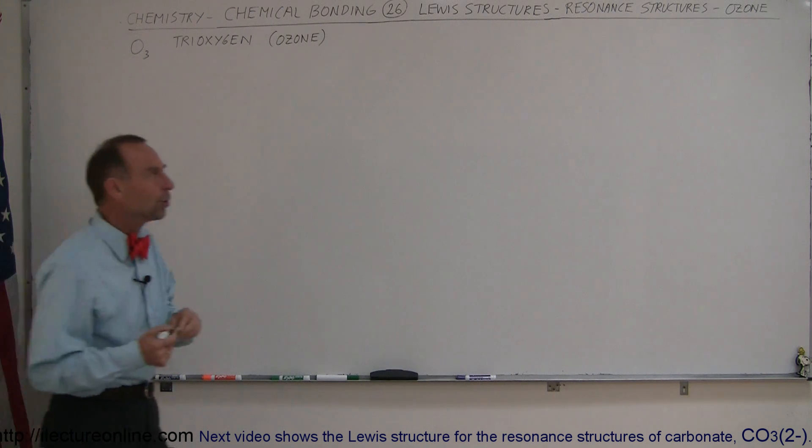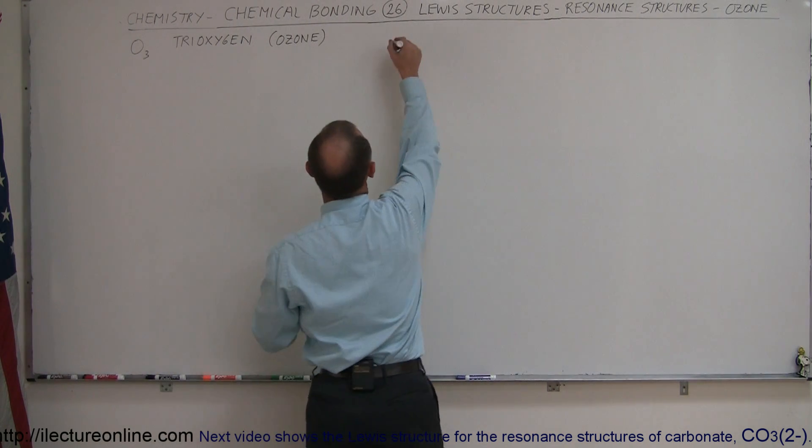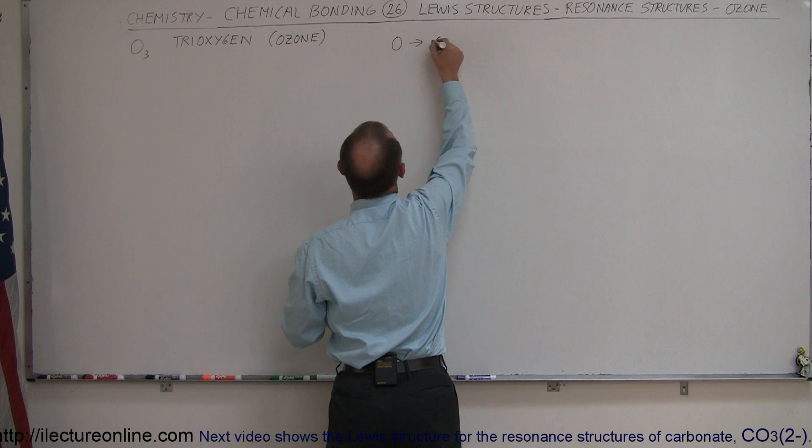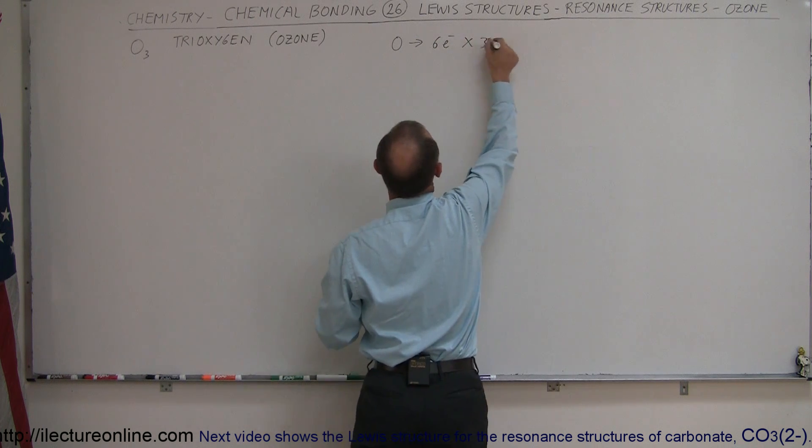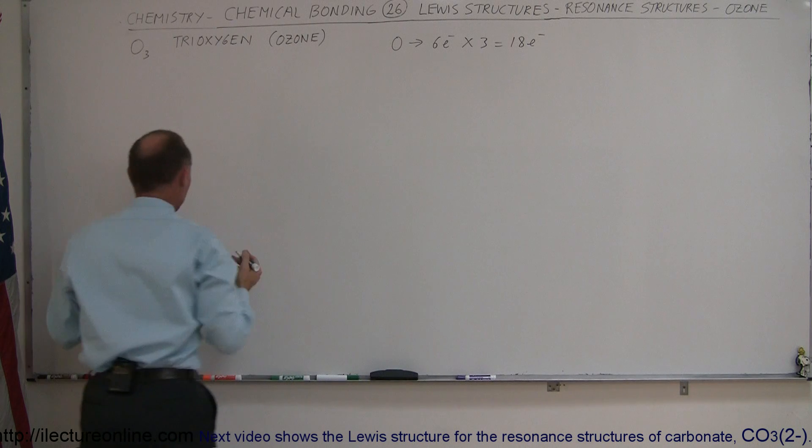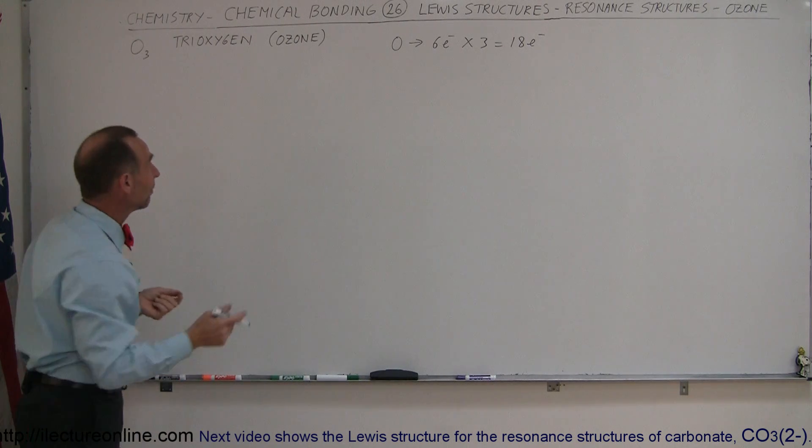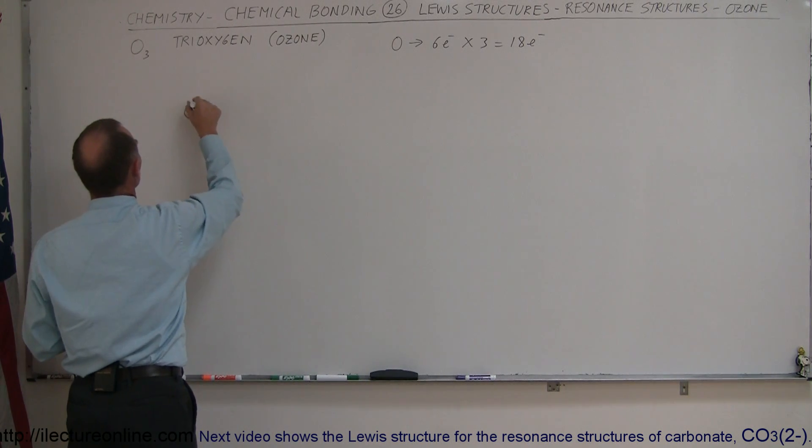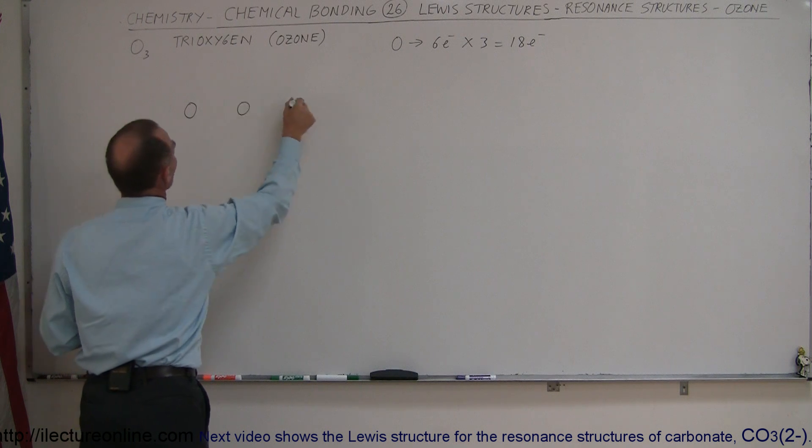Secondly though, you do want to figure out the number of valence electrons, and for oxygen we have six valence electrons. There's three molecules, so that's a total of 18 valence electrons. So what does that molecule look like? Probably something like this. There's three oxygen molecules. Let's start off with a single bond between them.